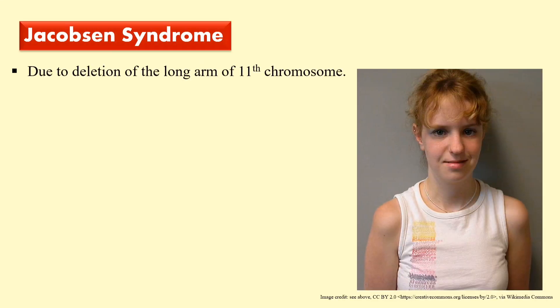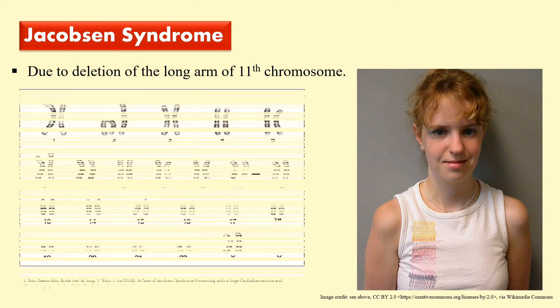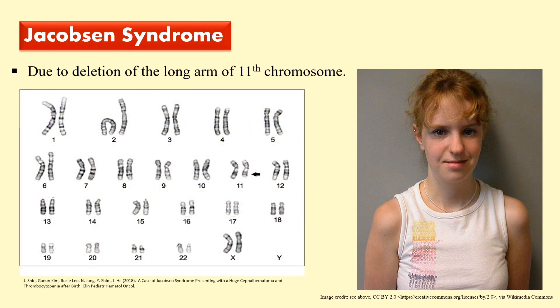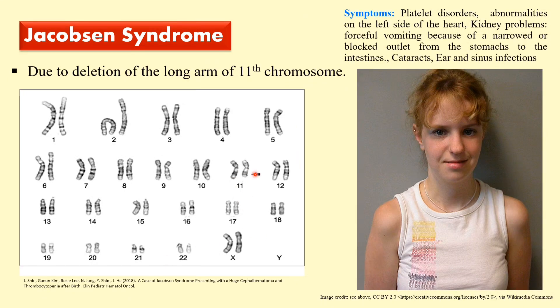Next is Jacobson syndrome. This is due to the deletion of the long arm of the eleventh chromosome. In the karyotype you can identify the eleventh chromosome, and due to the deletion in its long arm, Jacobson syndrome develops. The symptoms include platelet disorders, abnormality on the left side of the heart, and kidney problems. There is a deletion of the long arm of the eleventh chromosome.